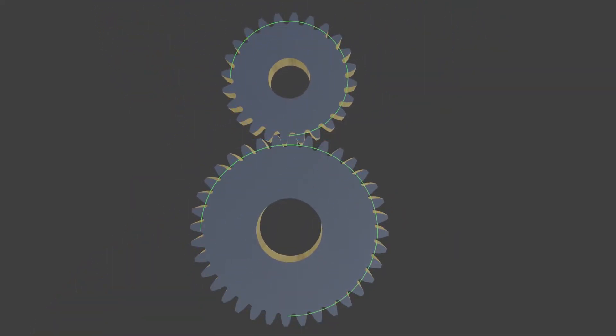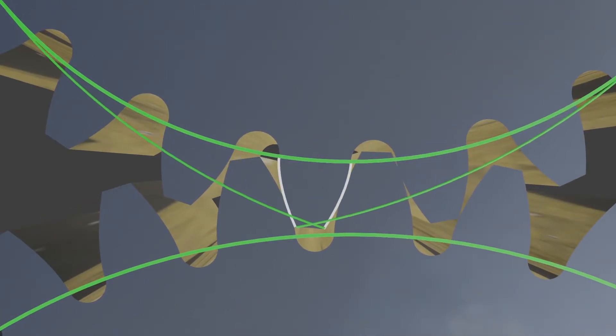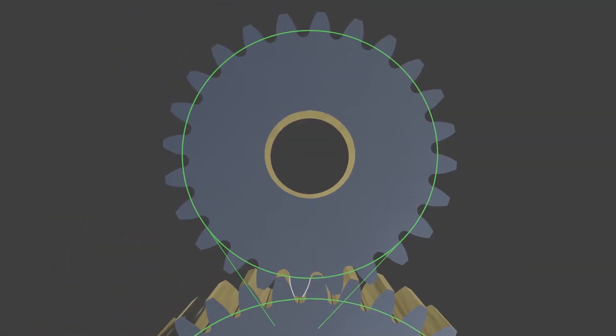The base circle of an involute gear is the circle from which involute tooth profiles are derived. The involute is generated from the base circle.